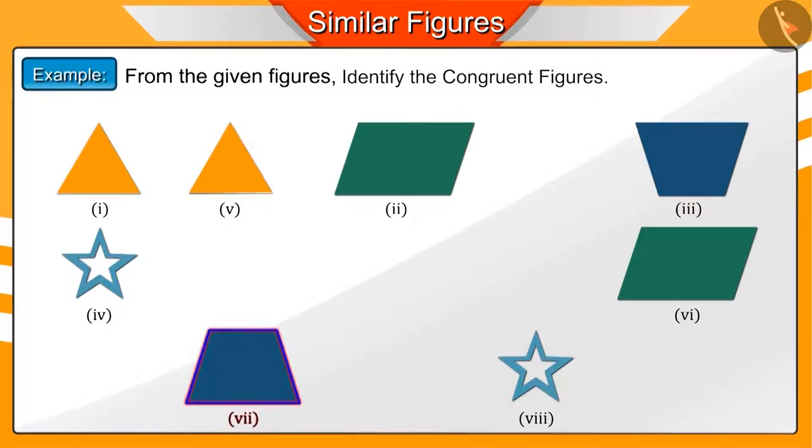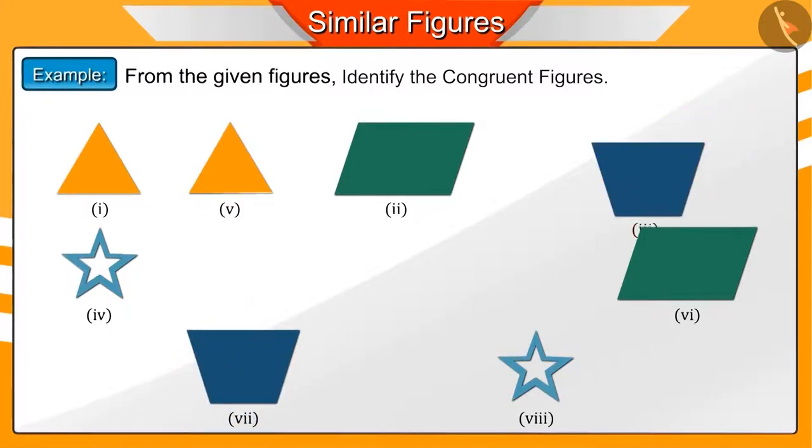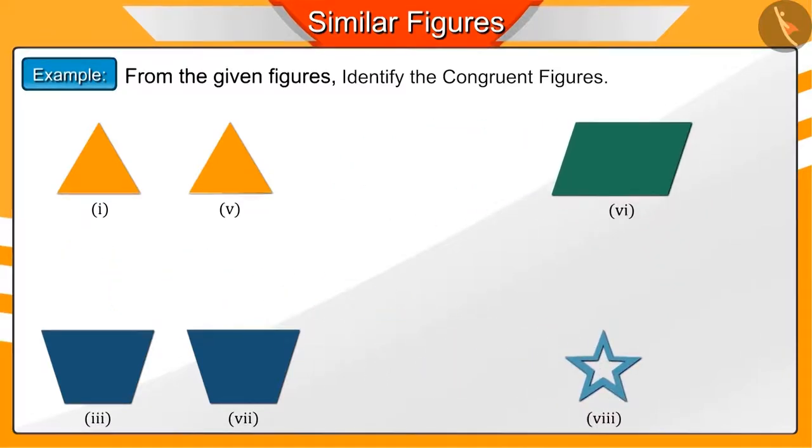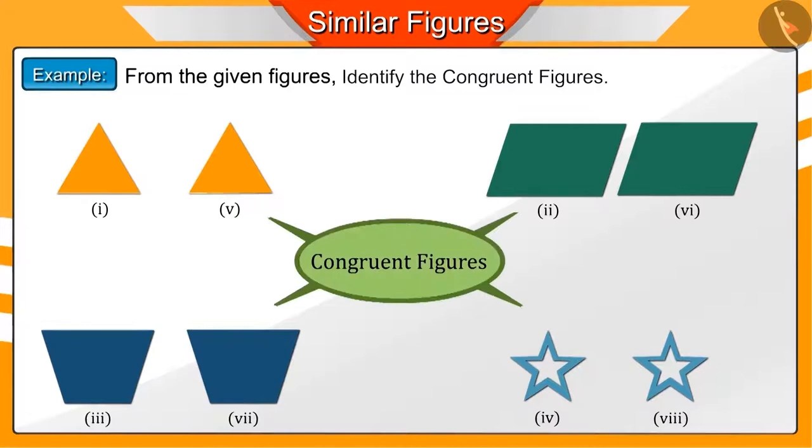Similarly, if figure 7 is rotated by 180 degrees, then it is congruent to figure 3. If we look at figures 2 and 6 and figures 4 and 8, we can see that they are congruent to each other through overlapping.